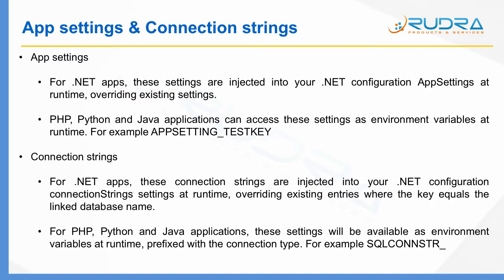Also, in terms of connection strings for PHP, Python, and Java applications, these settings will be available as environment variables at runtime, prefixed with the connection type. For example, for SQL, it will start with SQLCONNSTR_ followed by whatever the string you specified. These are all the application settings associated with Azure App Service.